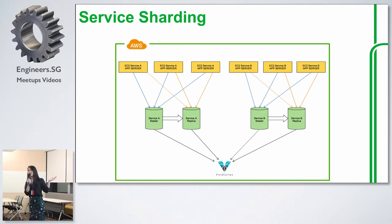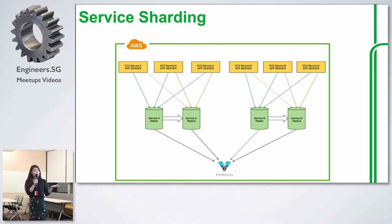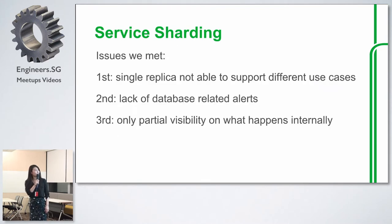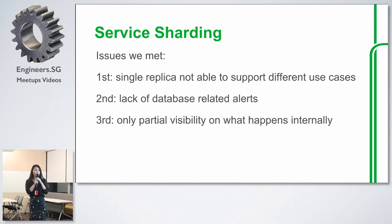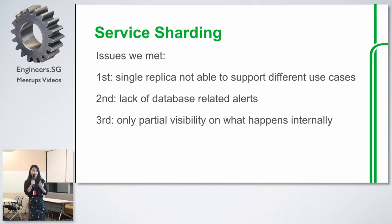By applying this approach, we definitely reduced the load on our main DB and ensured independence between different services — if something went wrong on one database, the other services could still work. But it's not perfect and we still had new challenges. The first remaining issue is each service only had one replica, which was not able to support different read use cases, so we considered creating different replicas.